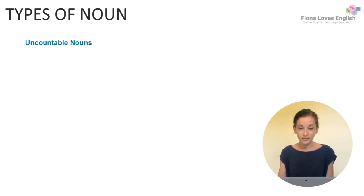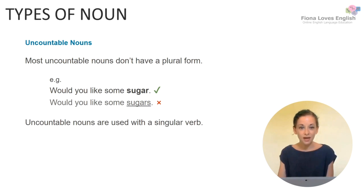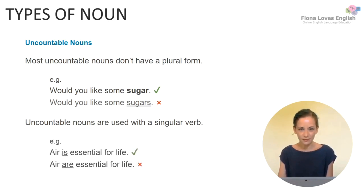Uncountable nouns don't usually have a plural form. For example, sugar — we would ask 'Would you like some sugar?' rather than 'Would you like some sugars?', even though sugar is made up of lots of individual bits. Sugar is an uncountable noun. Uncountable nouns are usually used with a singular verb. Another uncountable noun is air — like the air we breathe. We say 'Air is essential for life,' not 'Air are.'